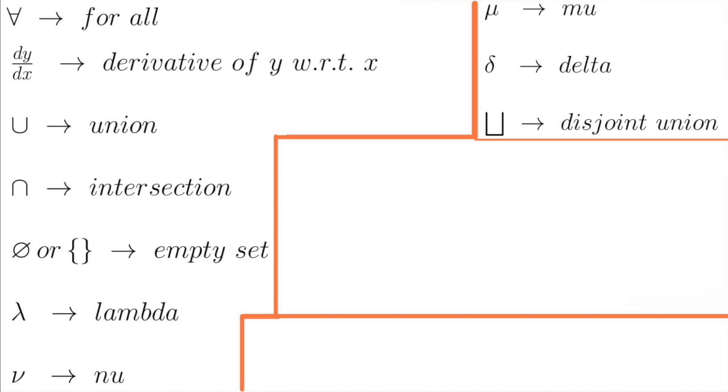And now, some popular Greek letters in use in mathematics. Lambda, nu, mu, omega, and delta, which can represent any variable depending on the context.